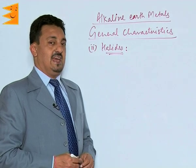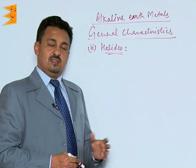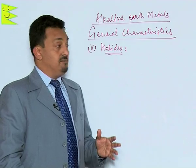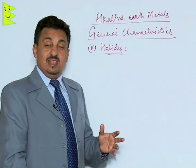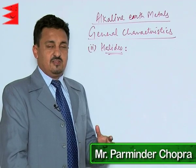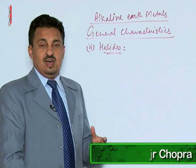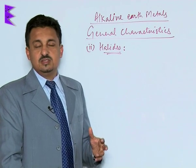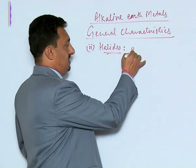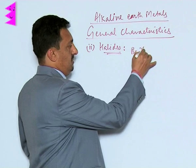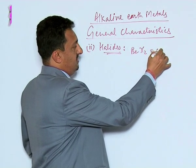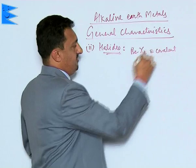Let us discuss the halides of alkaline earth metals. Except beryllium halides, the halides of all the rest of the elements of the alkaline earth metals are ionic in nature. Beryllium halides are covalent in nature.